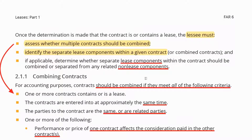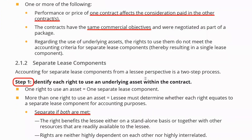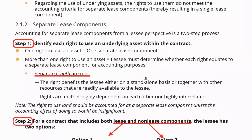Now that we have identified the lease versus the non-lease components, the next step is to start accounting for the lease. We might need to check whether we're accounting in the books of the lessee or the lessor, as the treatment differs. In the same contracts, you might need to differentiate between the different components — the lease and the non-lease components.